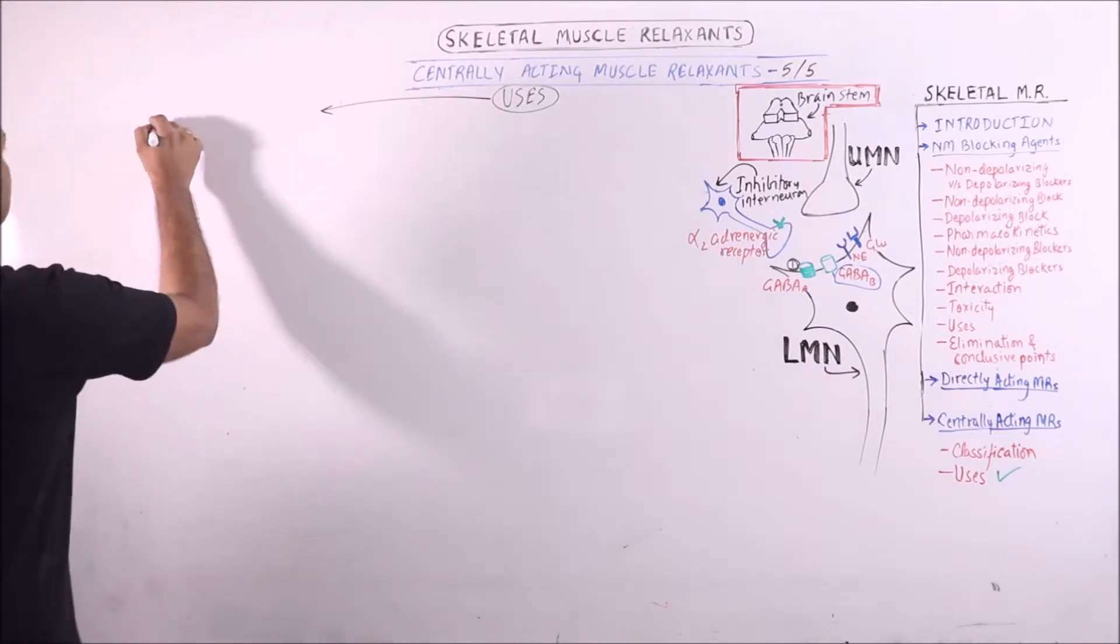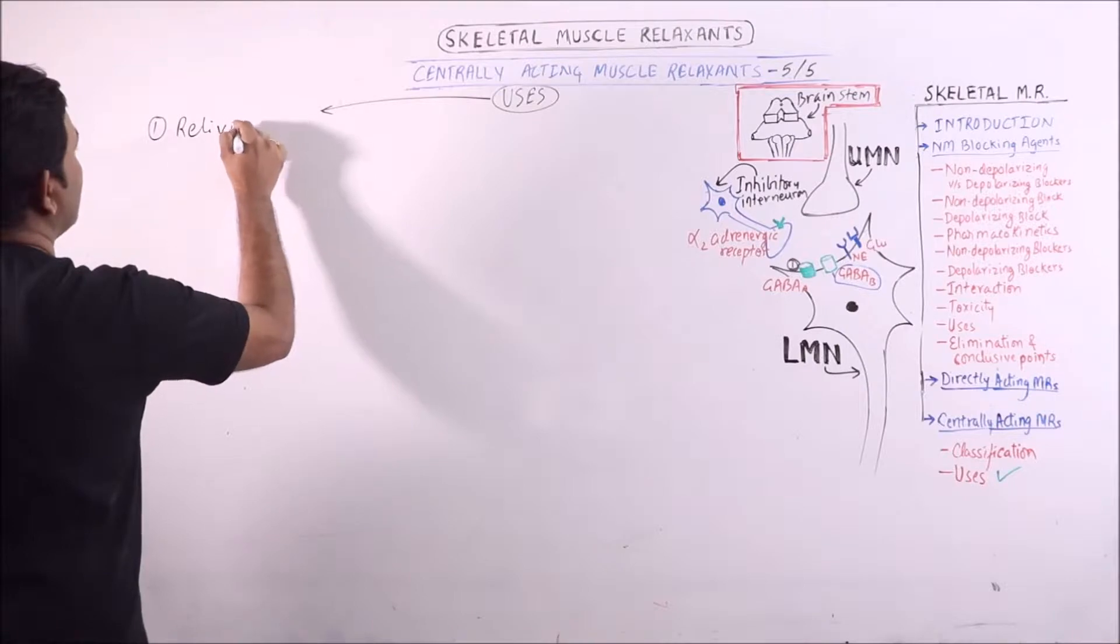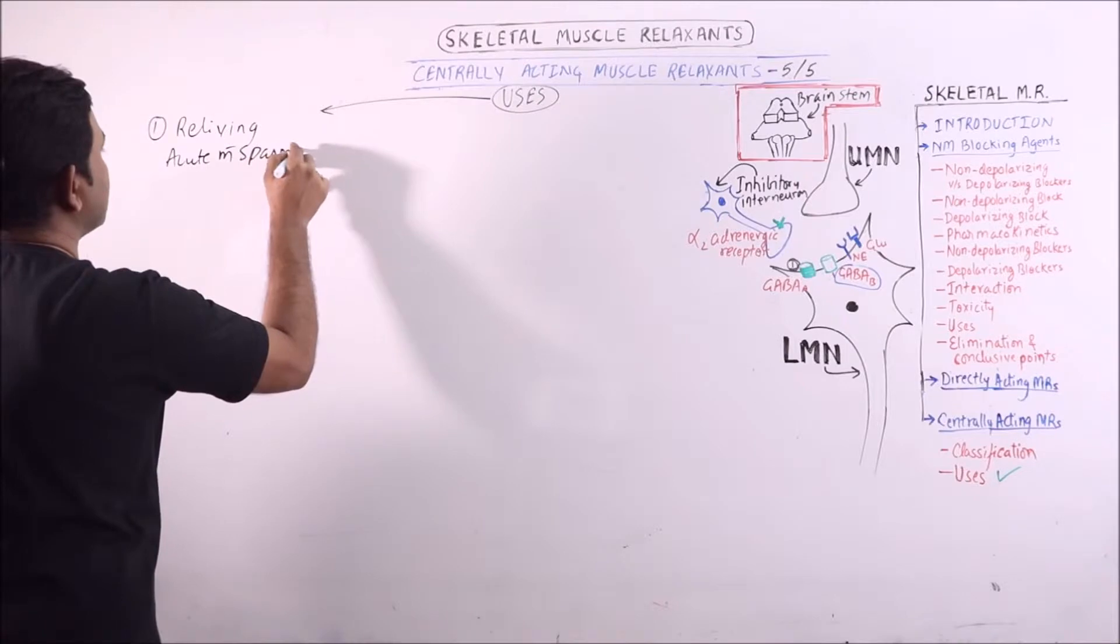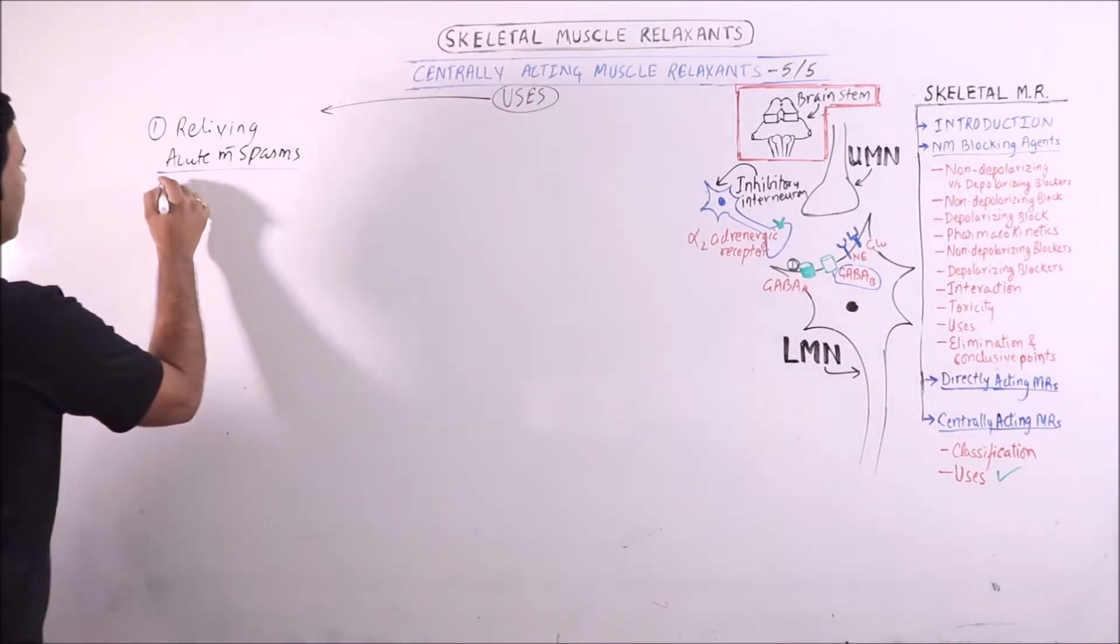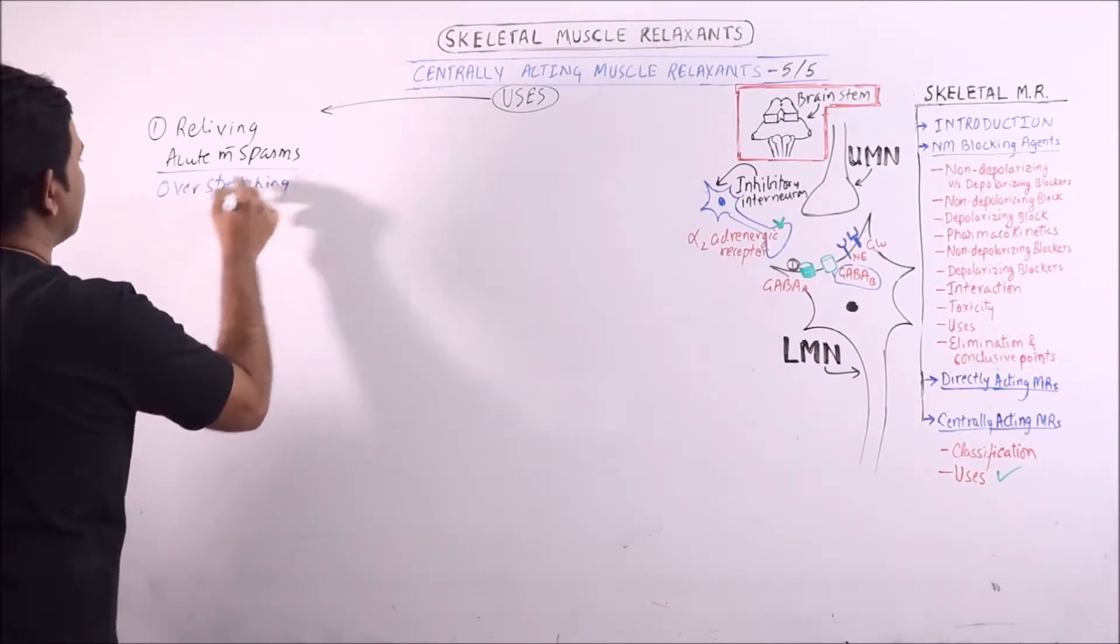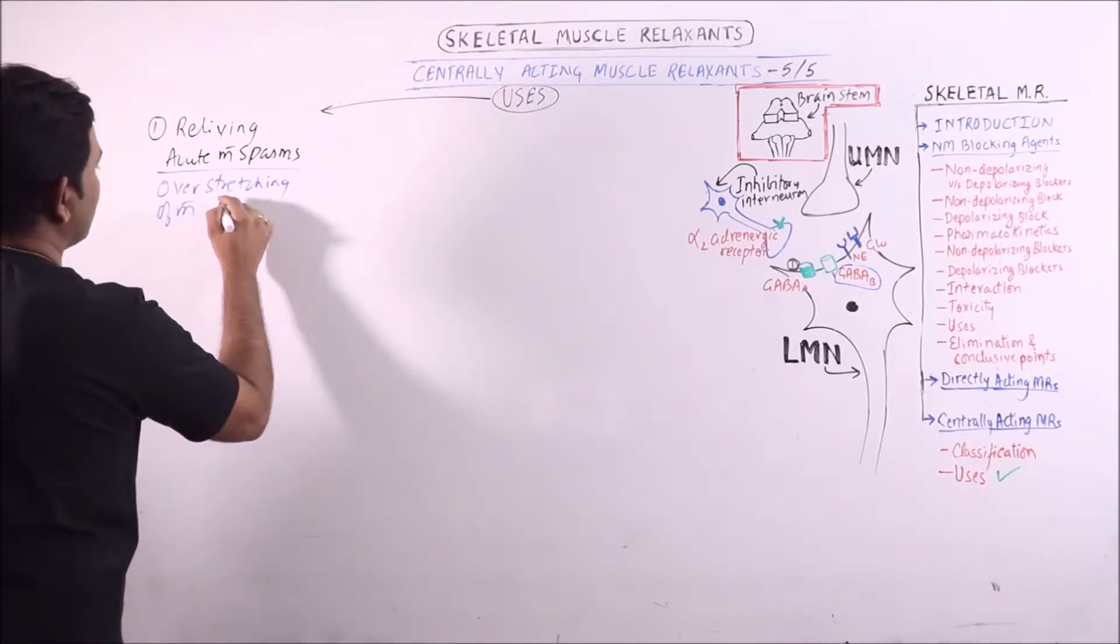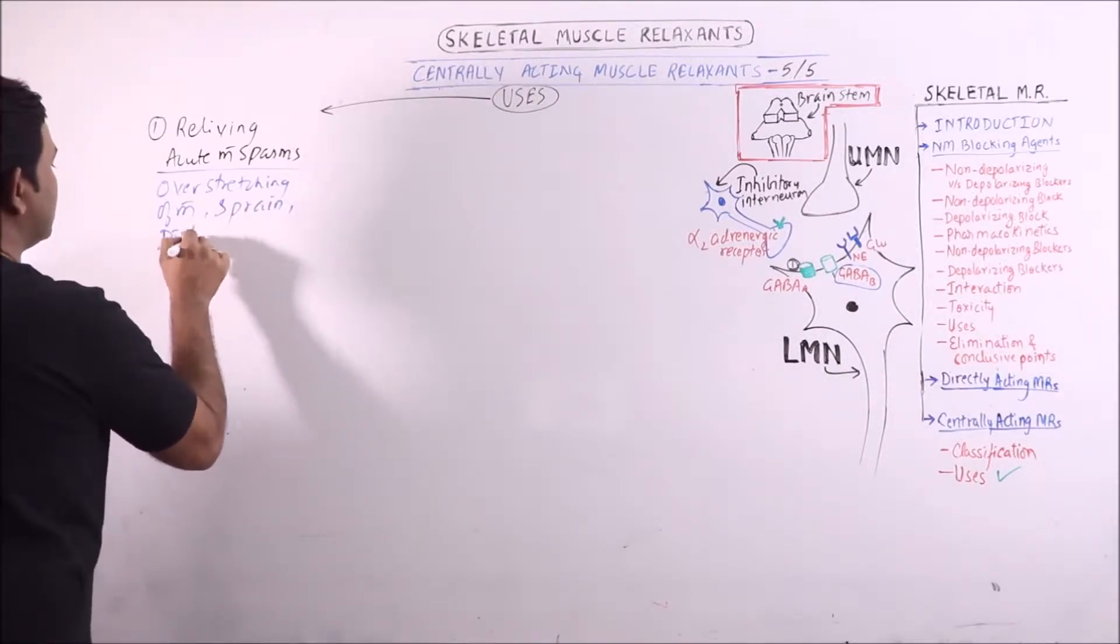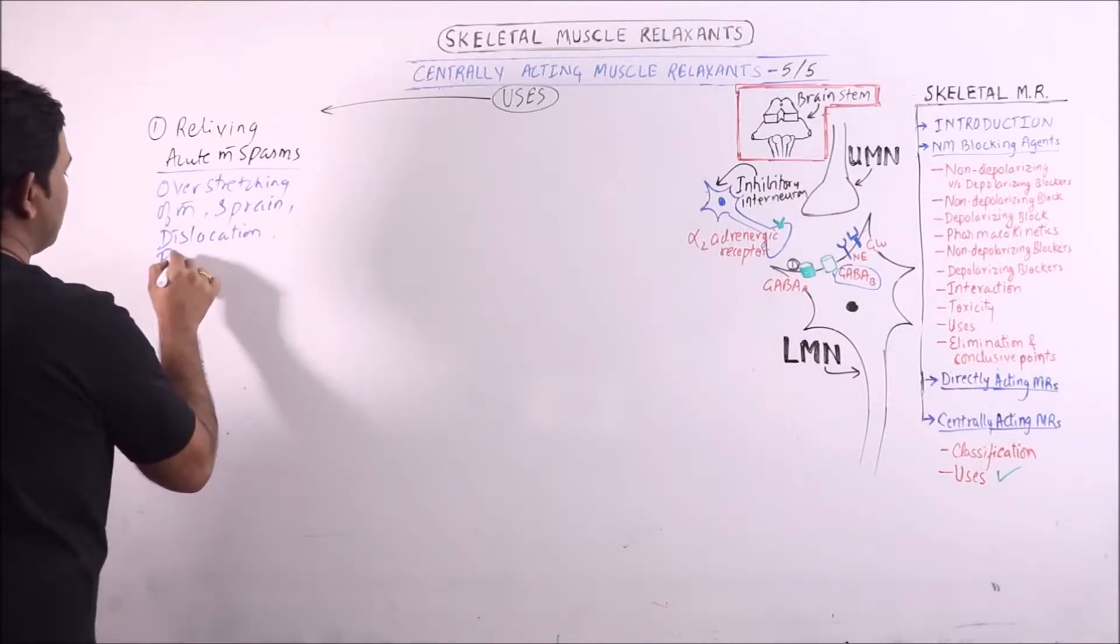First use: in relieving acute muscle spasms. These muscle spasms may occur during over stretching of muscles or these may occur due to sprain, dislocation, bursitis,